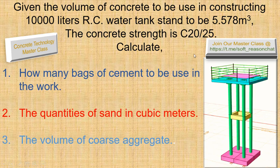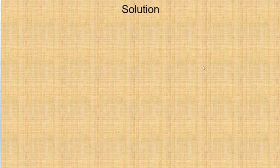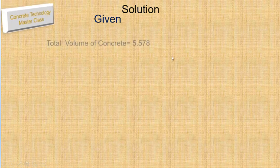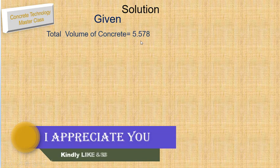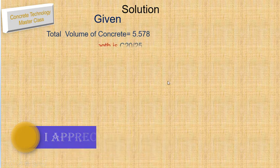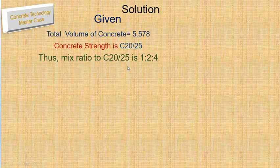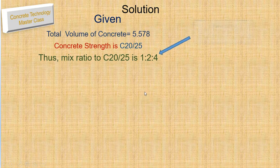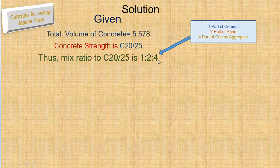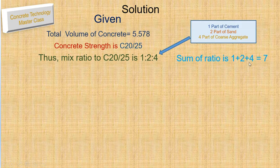Now let us go into the calculations. The total volume of concrete is 5.578 cubic meters, and the concrete strength is C20/25. The mix ratio for this concrete strength is 1:2:4, where 1 is the part for cement, 2 is for sand, and 4 is for coarse aggregate. The sum of the ratio is 1 + 2 + 4 = 7.